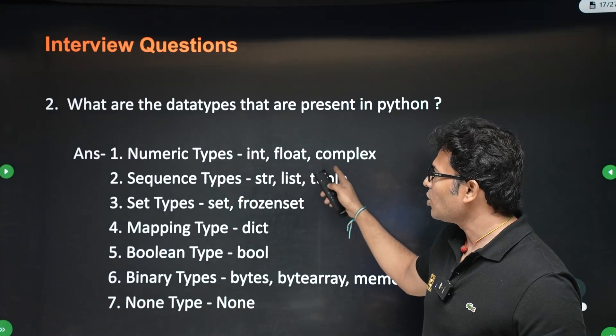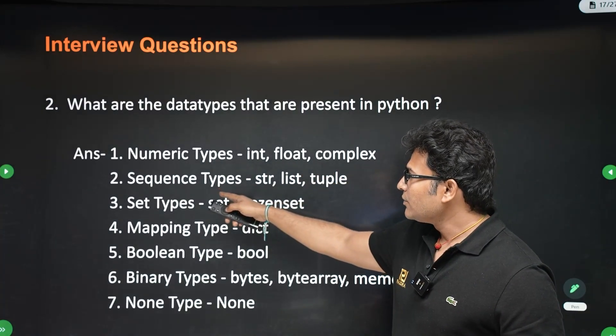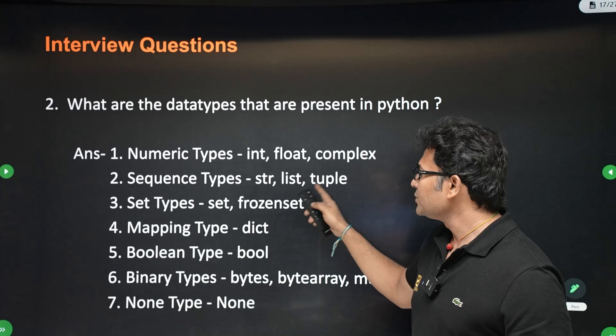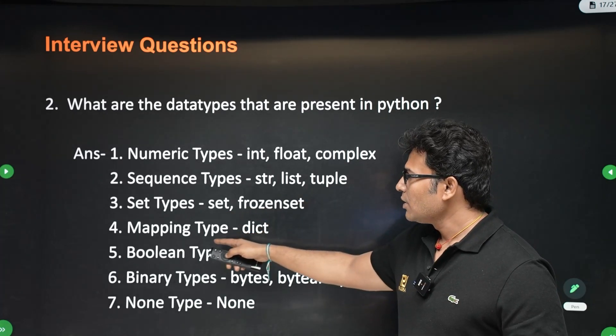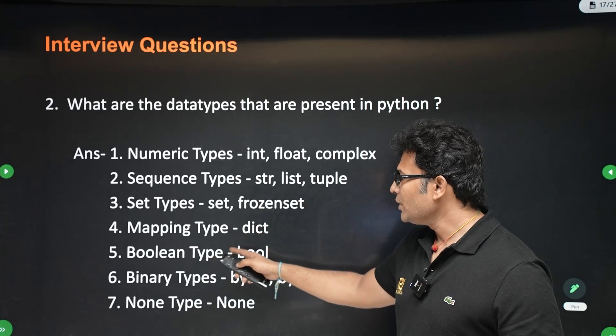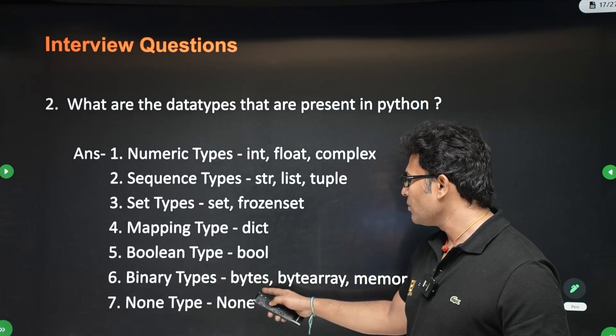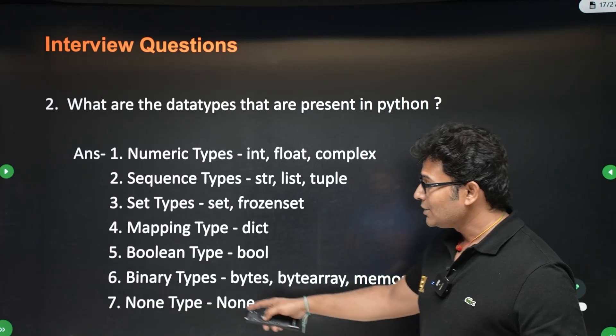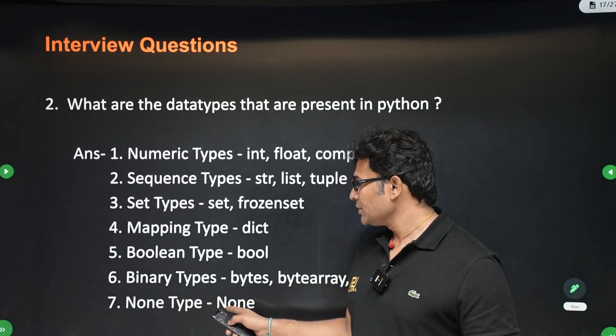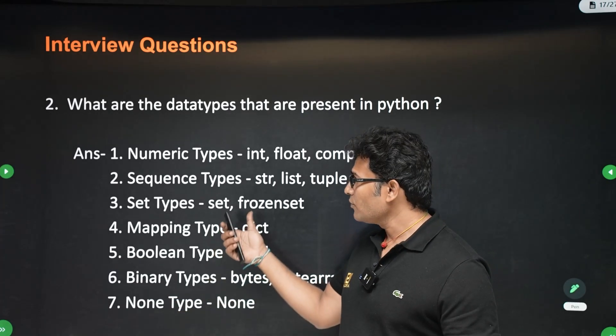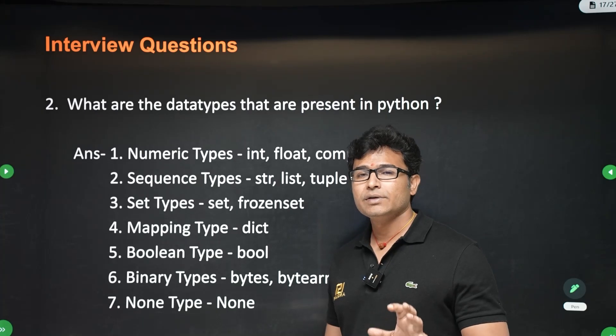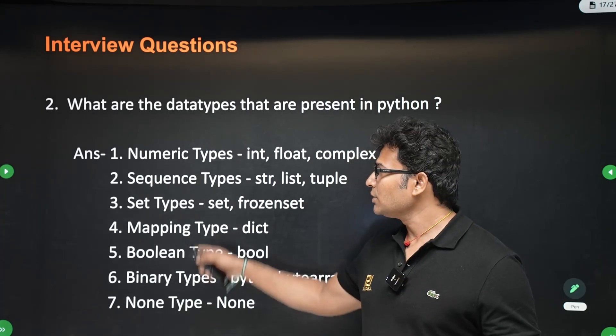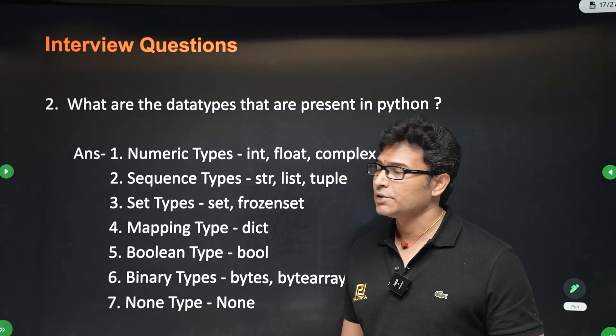For example, in numbers we have int, float, complex numbers. In sequence, we have string, list and tuple. In set, we have set and frozen set. Mapping, we have dictionary. Boolean, we have bool. Binary, we have bytes, byte array, memory view. And there is also a type called none, which is none. So we will talk about all of this in the coming lectures. But for now, you have to remember all this. If you are going for interviews, this will be a very popular question.